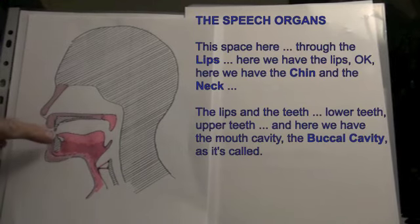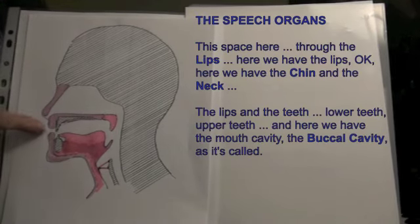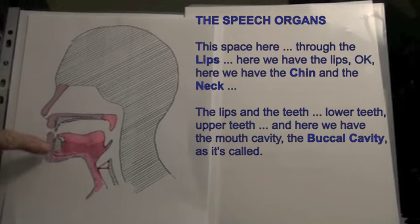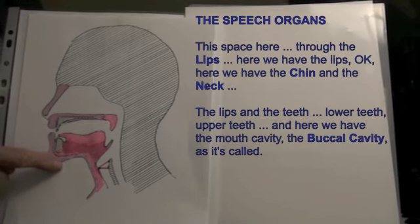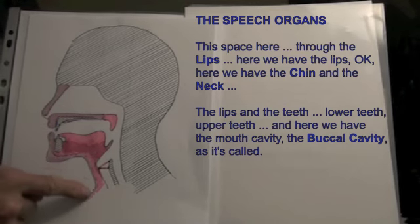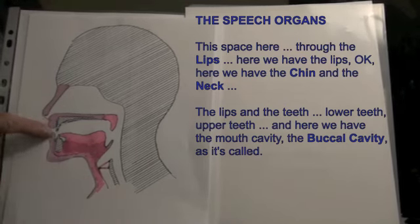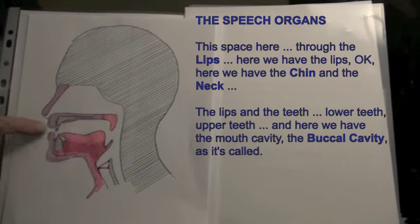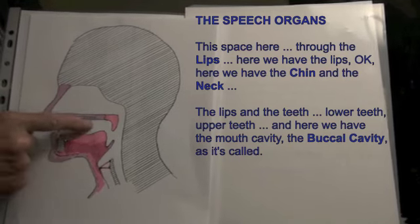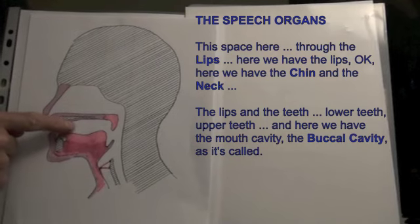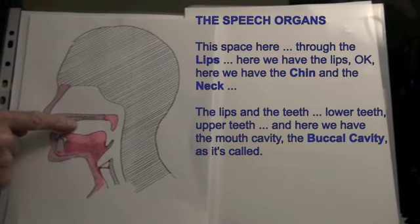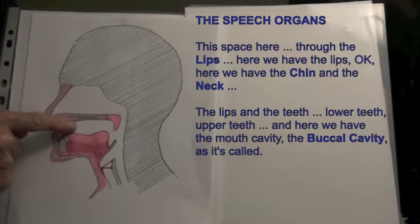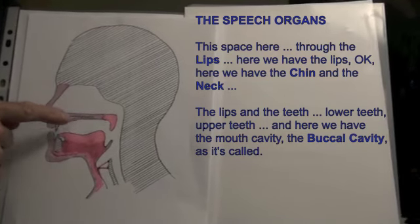This space here, through the lips — here we have the lips, the chin and the neck, the lips and the teeth, lower teeth, upper teeth. And here we have the mouth cavity, the buccal cavity as it's called.